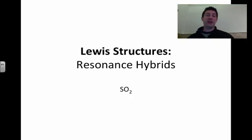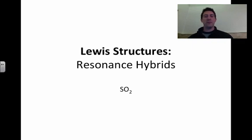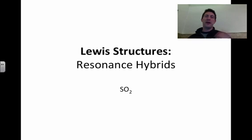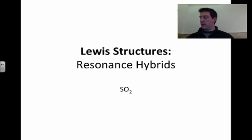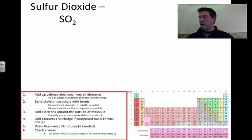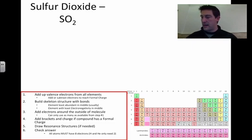We've got one more thing we need to look at, and this is the final topic: resonance hybrids. So what happens if we end up with a double bond somewhere on our molecule and a single bond somewhere else? How do we represent this? To explore resonance hybrids, let's first look at sulfur dioxide.